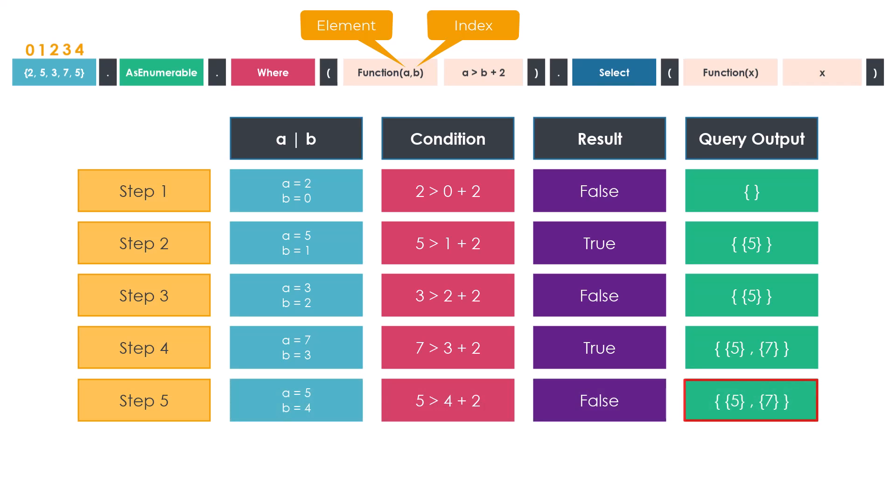This is how we can set two variables in a lambda expression. Some operators have more than one structure, like the where operator, having either one parameter or more than one. To learn more about each operator, please check the LINQ videos on the channel where different operators are covered, with more videos to be published about remaining operators.